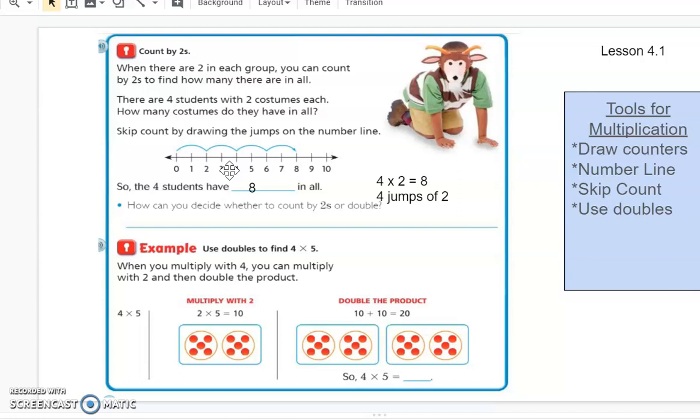So when there are two in each group you can count by twos to find how many there are in all. There are four students with two costumes each. How many costumes do they have in all? So I'm picturing again getting that visualization in my mind. I have four students and they each have two costumes. Again I'm seeing that important keyword each in there. So I know that I'm going to have equal groups. And so I can skip count on my number line. And just like we had before with our four groups of two now we're going to think of it as four jumps of two. So we're going to jump four times with two in each jump. So really we're going to skip count that way. Two, four, six, eight. So the students have eight of the costumes in all.